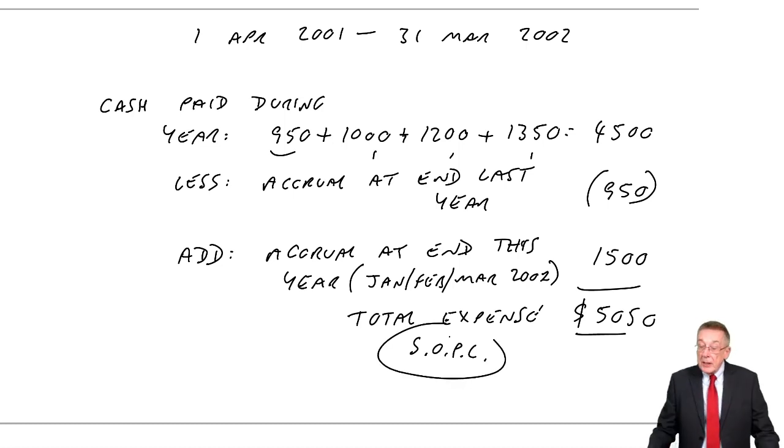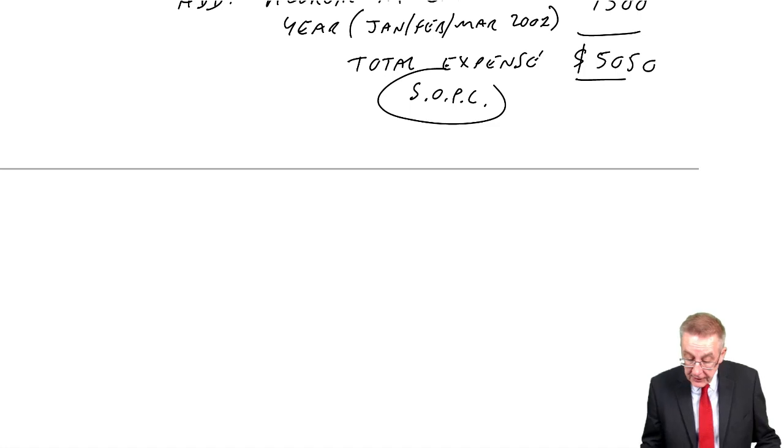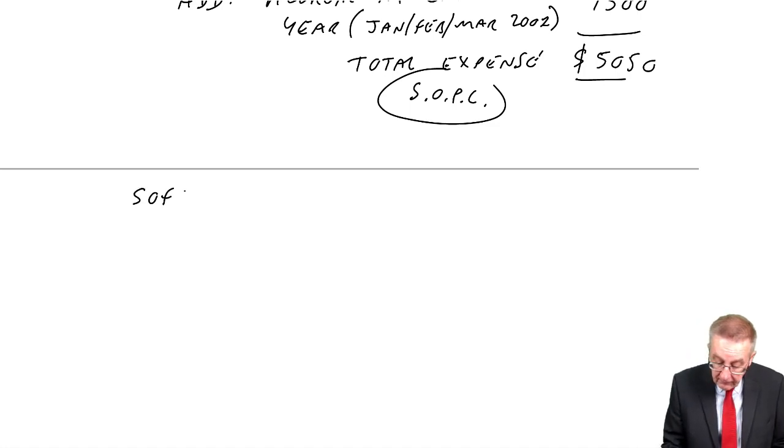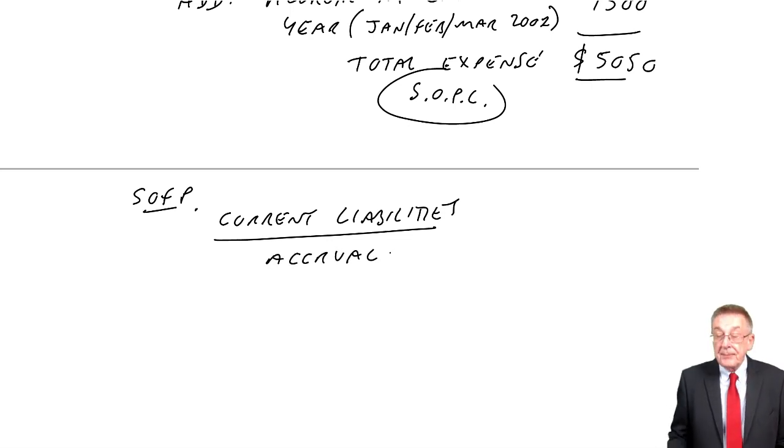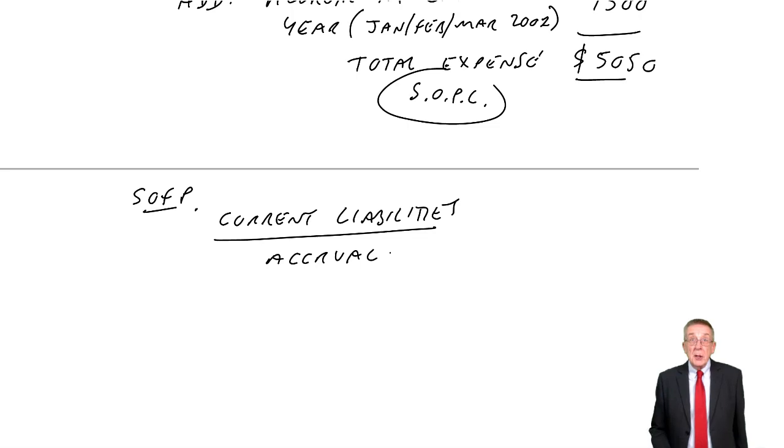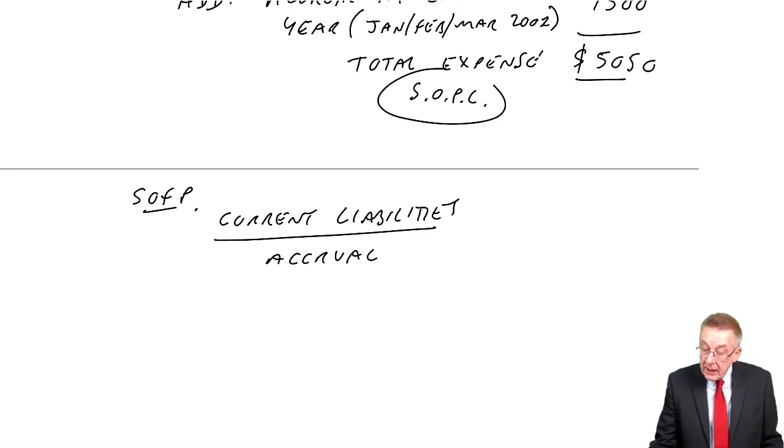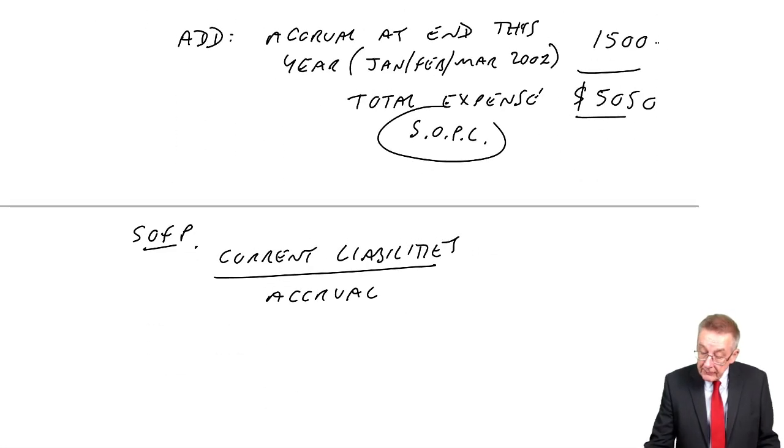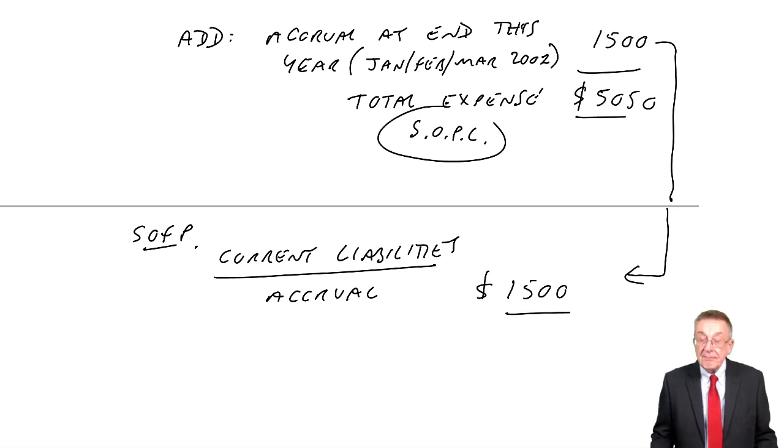What about the statement of financial position? Well, under the heading current liabilities, accruals or accrued expense is the amount owing at the end of the year. The amount owing was January, February, March, which was £1,500.